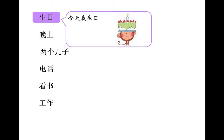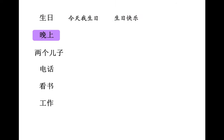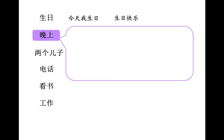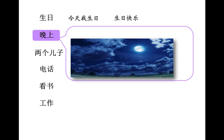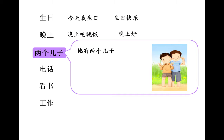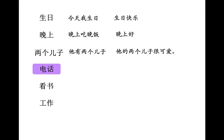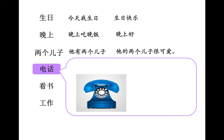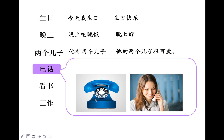工作。对了，生日快乐。第二个，晚上。这是晚上，对吗？晚上我们吃晚饭，晚上吃晚饭。我们还可以说，晚上好。两个儿子，你看，这是两个儿子。他有两个儿子，他的儿子怎么样？可爱吗？嗯，他的两个儿子很可爱。